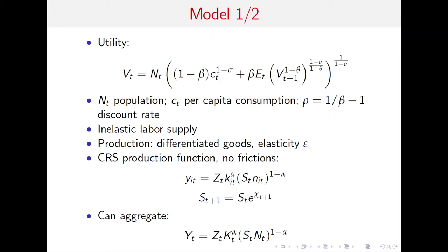Epstein-Zin utility is important because to match asset pricing facts, you need to disentangle attitudes towards intertemporal substitution from attitudes towards risk. The preferences are a standard Epstein-Zin formulation: Vt is utility, an aggregate of consumption today and future utility. Sigma indexes the intertemporal elasticity of substitution, and theta is the degree of relative risk aversion. CT is per capita consumption, NT is population, and beta is the discount factor.